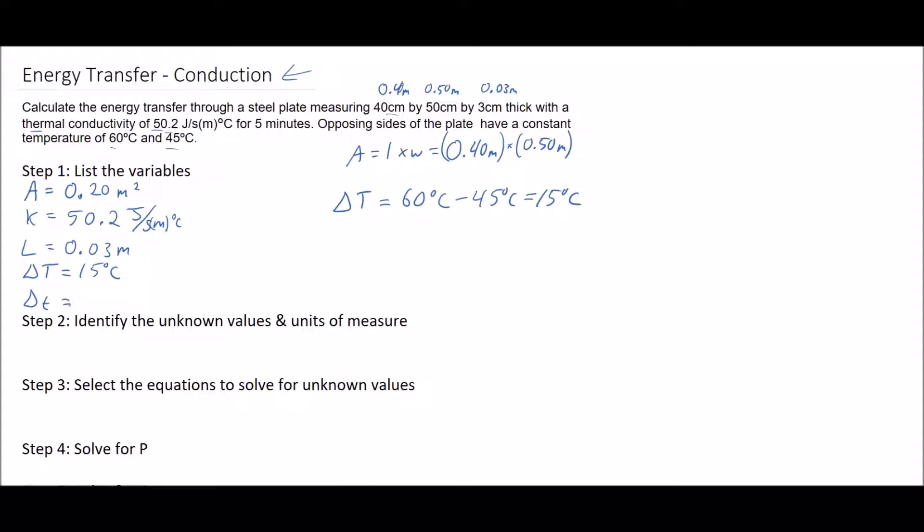Our other delta T, our lowercase t, is time. For this one we have it in five minutes and minutes doesn't work, we need seconds. So our lowercase delta t, we have five minutes, and there's 60 seconds in one minute, so minutes cancels out and we have 300 seconds.